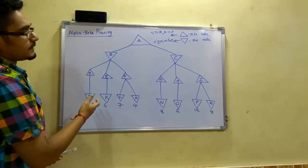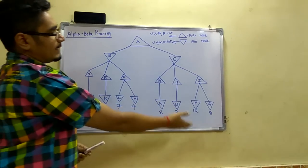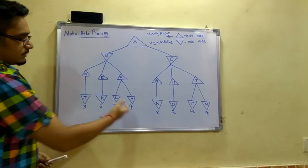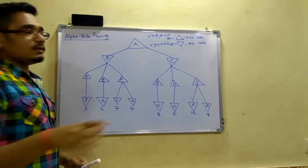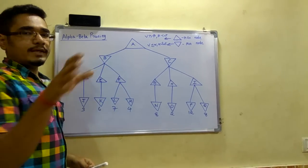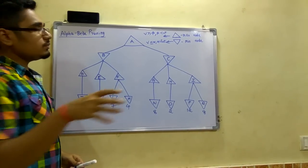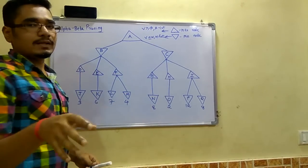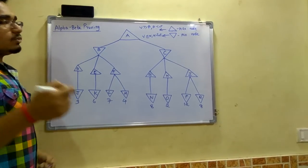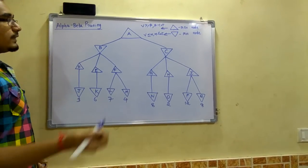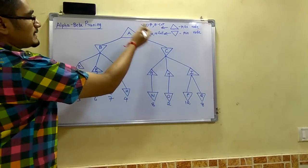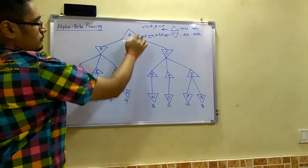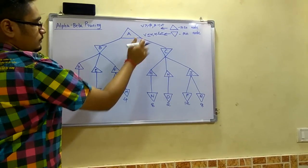As you can see, there is a left subtree as well as a right subtree, and there are leaf nodes with assigned values. We will see how to solve this problem and how to cut these trees. To get started, we will first consider the maximizer node, that is the root node. So A is the root node here.